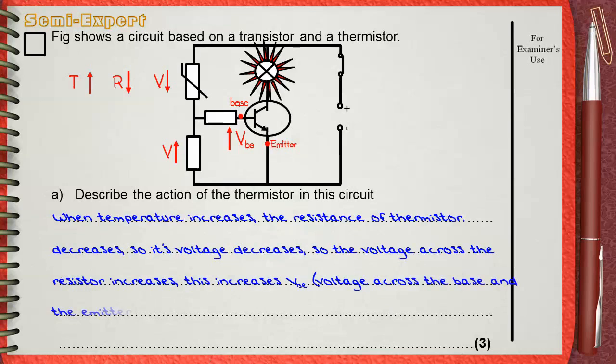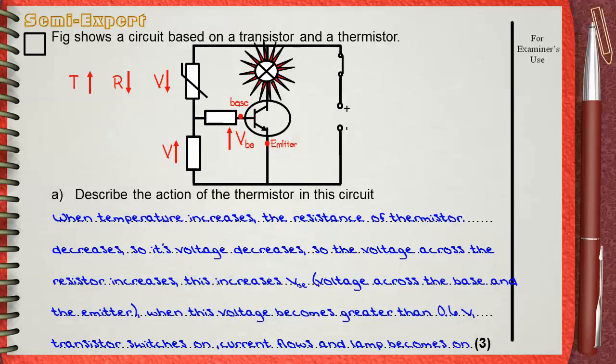So the voltage across the resistor increases. This increases VBE, which is the voltage across the base and the emitter.